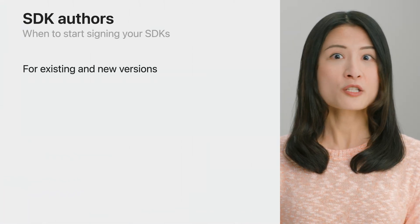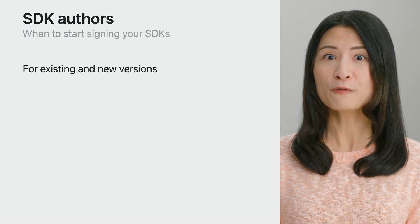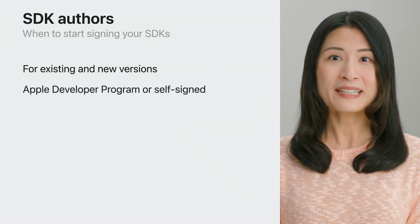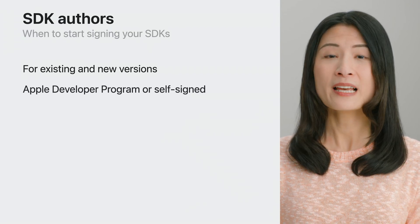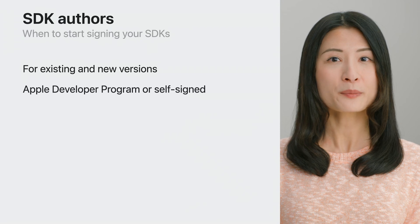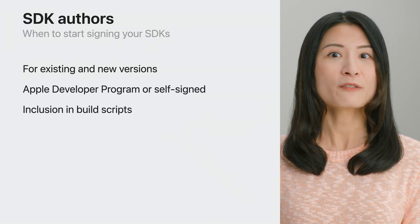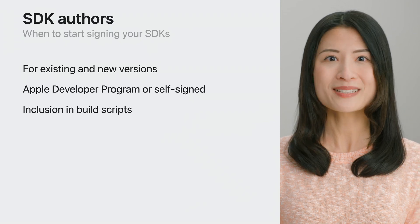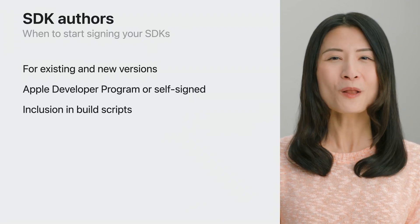Developers including your SDK in their app will be able to confirm that the XCFramework was signed by you by using the new feature included in Xcode. If you always sign the SDKs you distribute, this new feature in Xcode will help your SDK clients get more confidence in their supply chain. Doing this is simple — you can start straight away with versions of your frameworks that you've already published with no new build required. This even works using a self-signed certificate if you are not currently a member of the Apple Developer Program. You can then do this for all new versions of your XCFrameworks by including the codesign command in a build script so that you no longer need to worry.